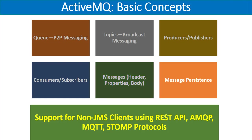Messages are the key ingredient of the whole picture — they are what is communicated between the producer and the consumers through a message broker. When we talk about a message in ActiveMQ, it consists of three parts: headers, properties, and body. Headers and body are always present; properties are optional.